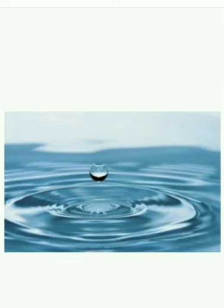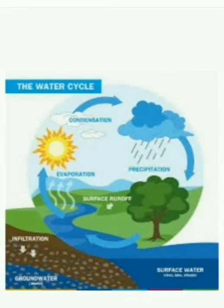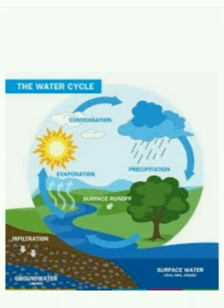The water which is essential for living beings is available on the earth through the process of water cycle. In water cycle we see three processes — condensation, evaporation and rain. From these three processes we understand the water cycle, from which we can get water.